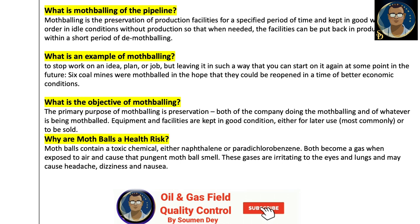Some basic questions come to mind when speaking about mothballing. First: what is mothballing of a pipeline? Mothballing is the preservation of production facilities for a specific period of time, kept in good working order in idle condition without production, so that when needed the facility can be put back in production within a short period of de-mothballing. An example: to stop work on an idea, plan, or job but leave it in such a way that you can start it again at some point in the future — for example, six coal mines were mothballed in the hope they could be reopened in better economic conditions.